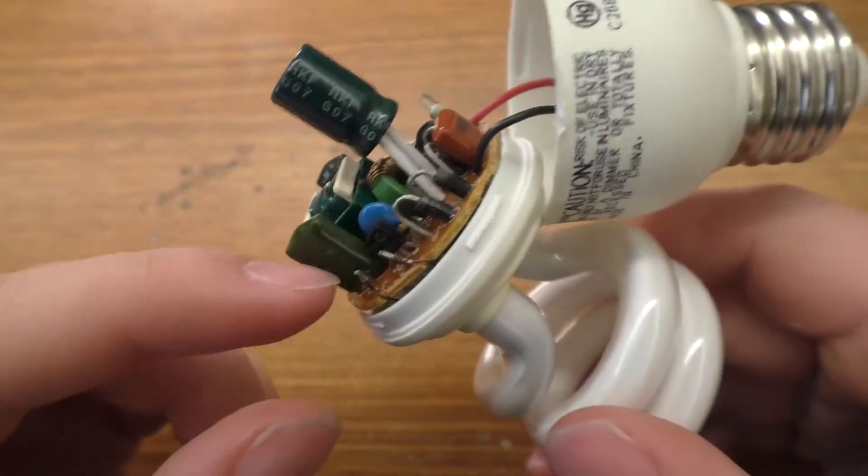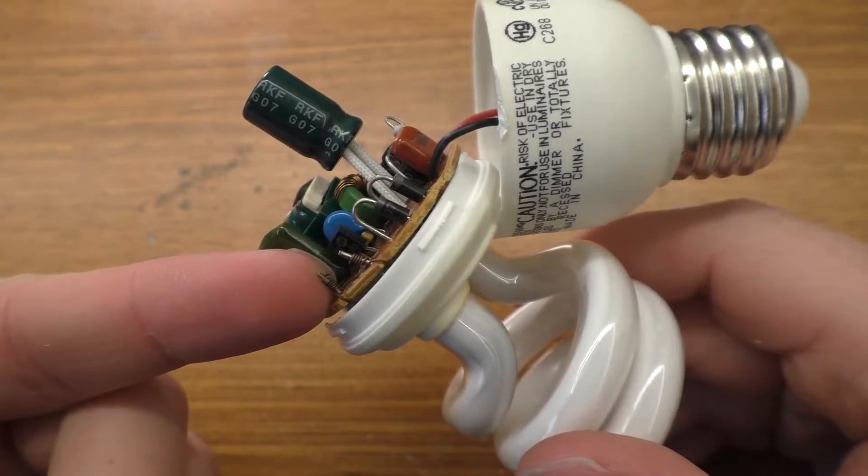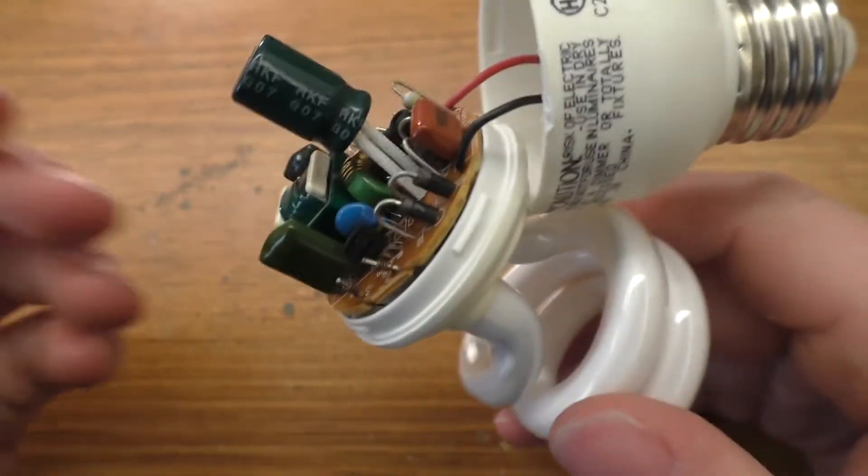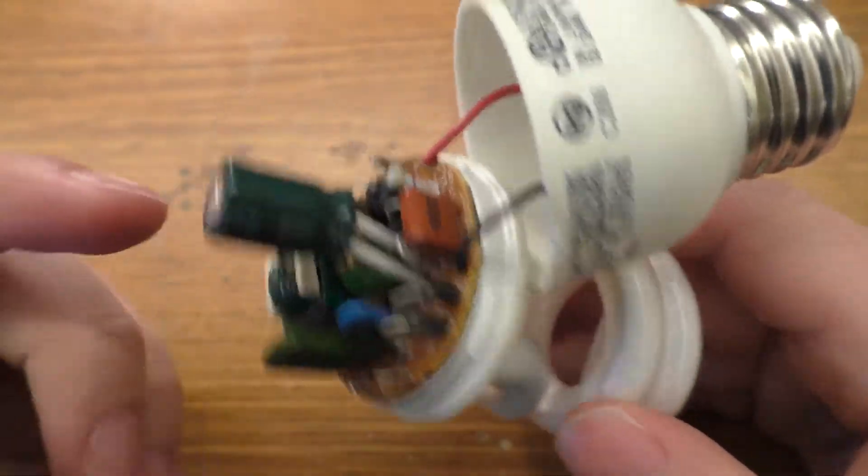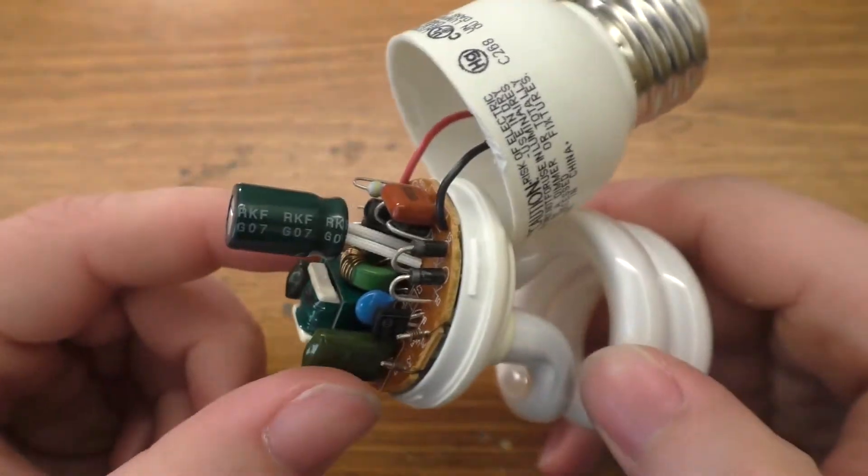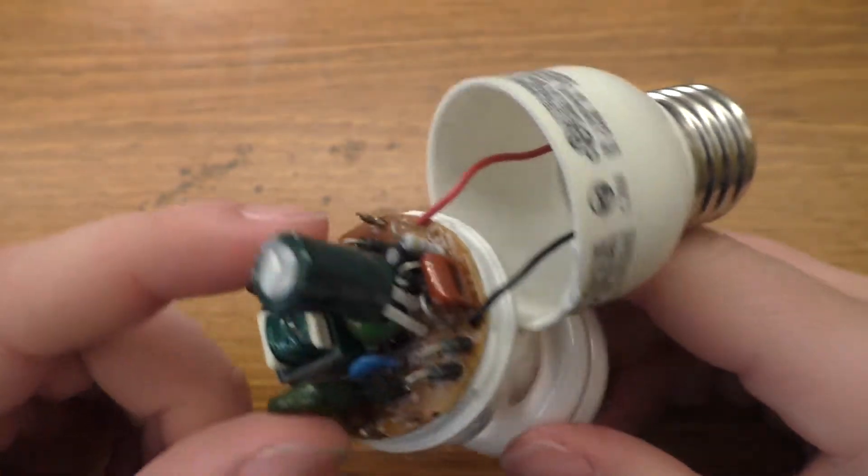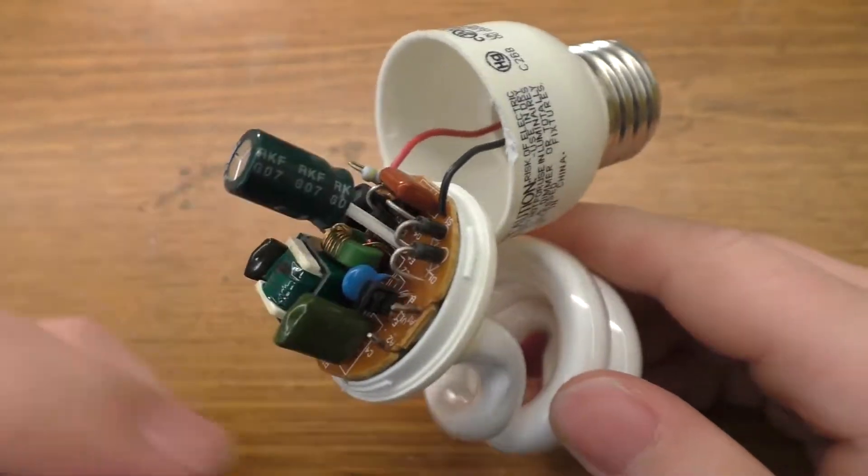And they are 13003, so 13003. They're both the same, both the same part. And those are high voltage high speed switching transistors. So nothing really too special there. There's a couple of diodes laid out on the board.